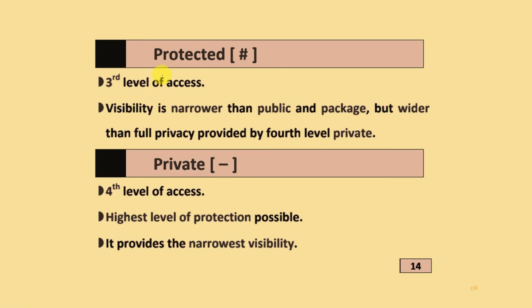Third is protected. Visibility is narrower than public and package but wider than the full privacy provided by the fourth level, private. Private is the highest level protection possible and provides the narrowest visibility.